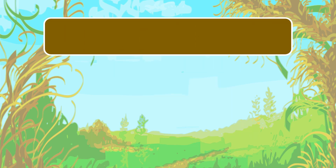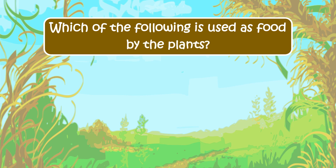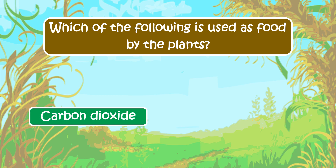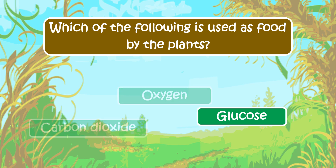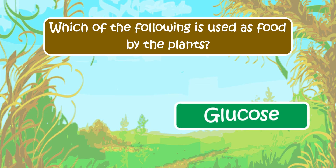The last question: which of the following is used as food by the plants? The options are carbon dioxide, oxygen, or glucose. The right answer is glucose — glucose is used as food by the plants.